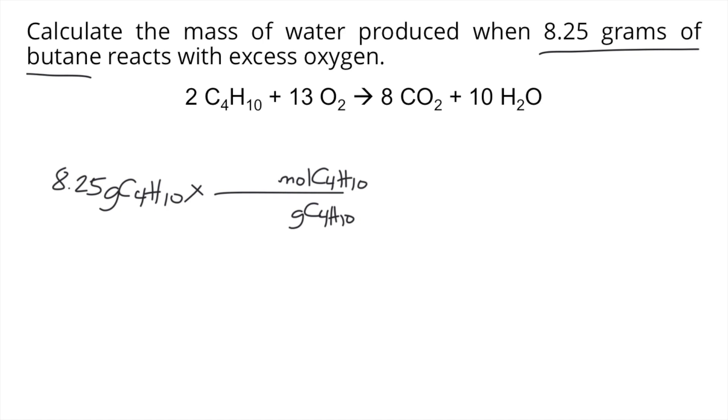What we're going to use is the molar mass of butane. So if you solve the molar mass of C4H10, you will get 58.12 grams for every 1 mole of C4H10. So the grams of C4H10 would cancel out and now you have the moles of C4H10.